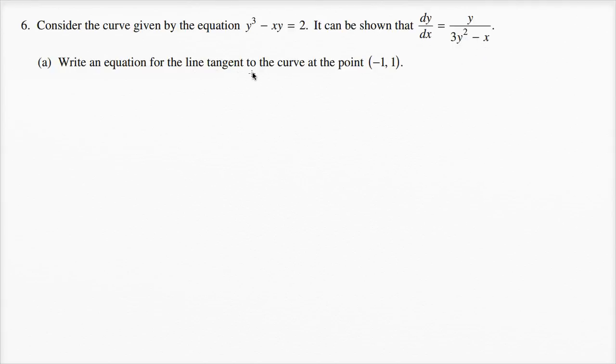Write an equation for the line tangent to the curve at the point (-1, 1). We can figure out the equation if we know the slope of the line and a point it goes through.